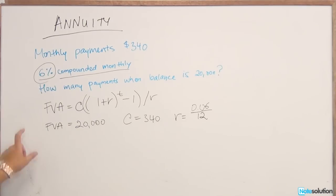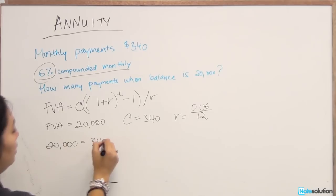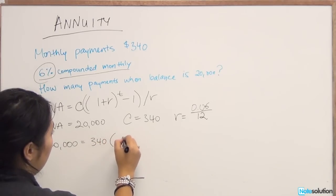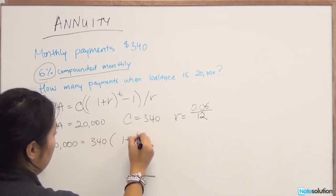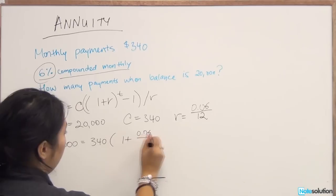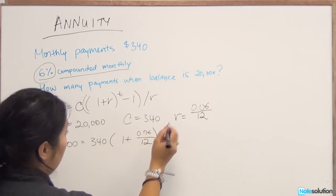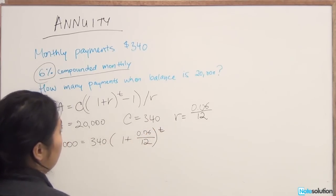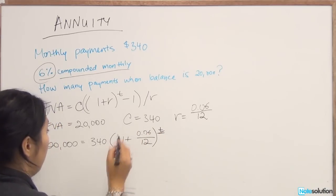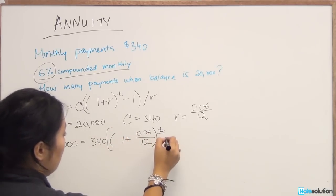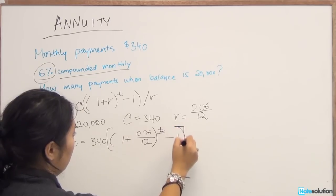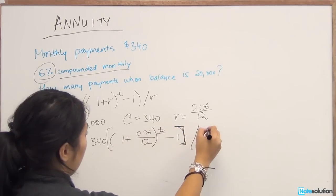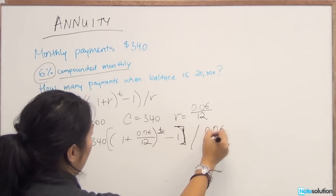So now we can substitute everything we have available to us into the equation. So we have 20,000 equals 340 times 1 plus 0.06 divided by 12 to the power of t, because that's what we're trying to find out. We don't know how many payments we made already, minus 1 divided by interest rate in monthly terms.